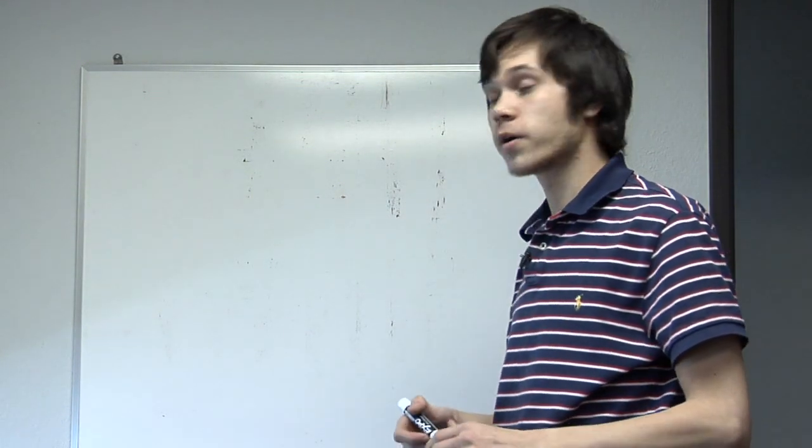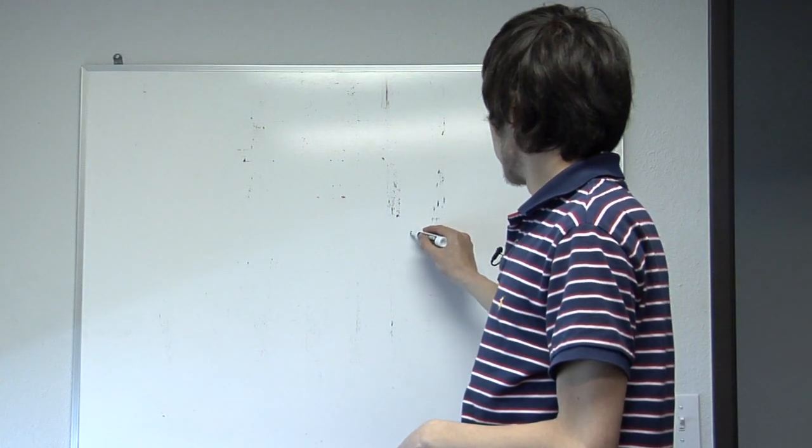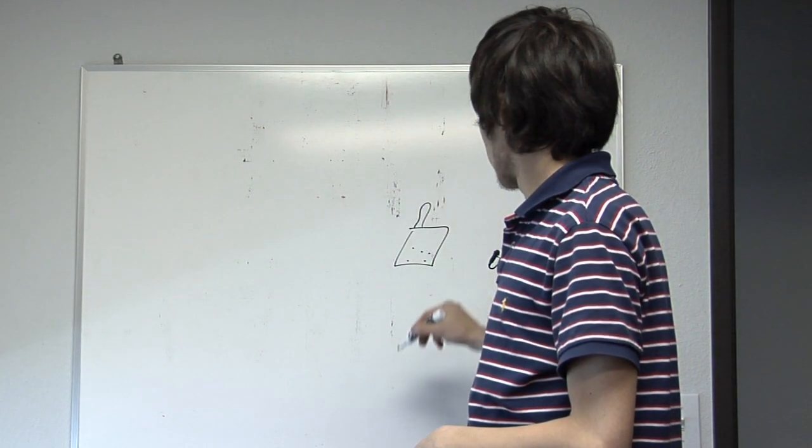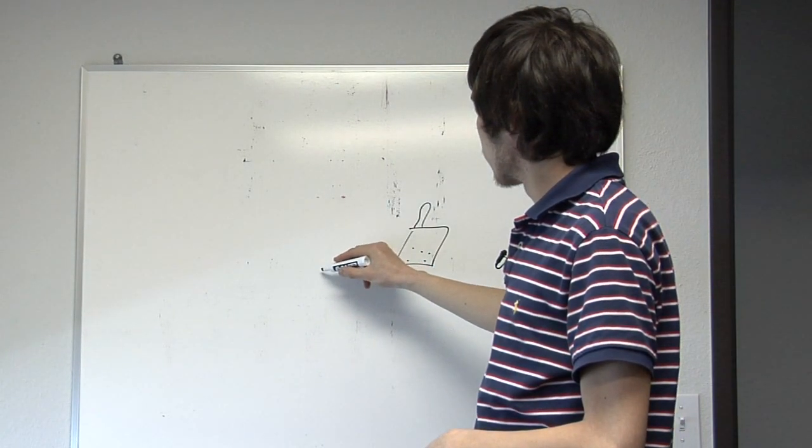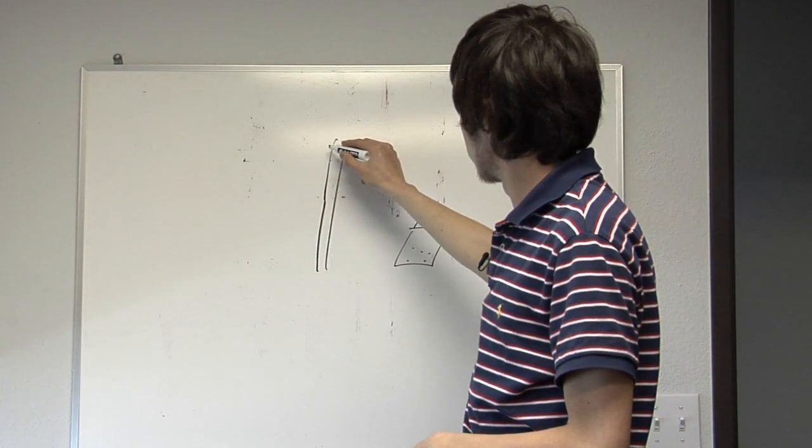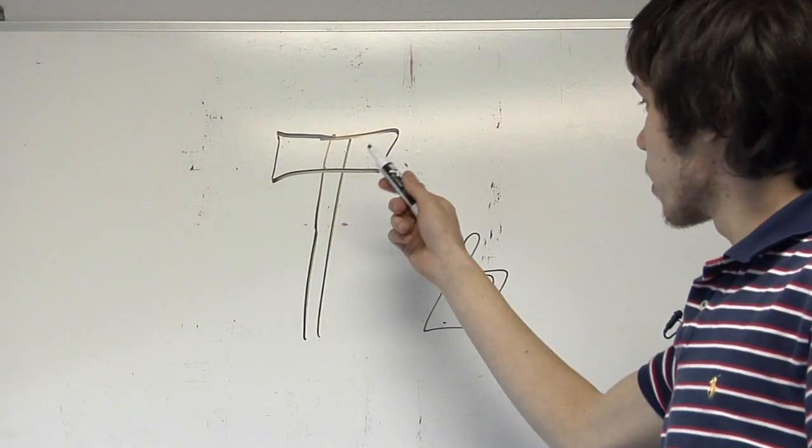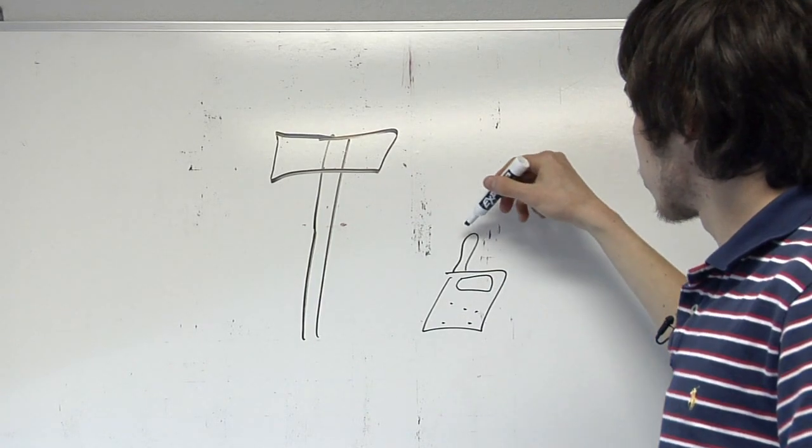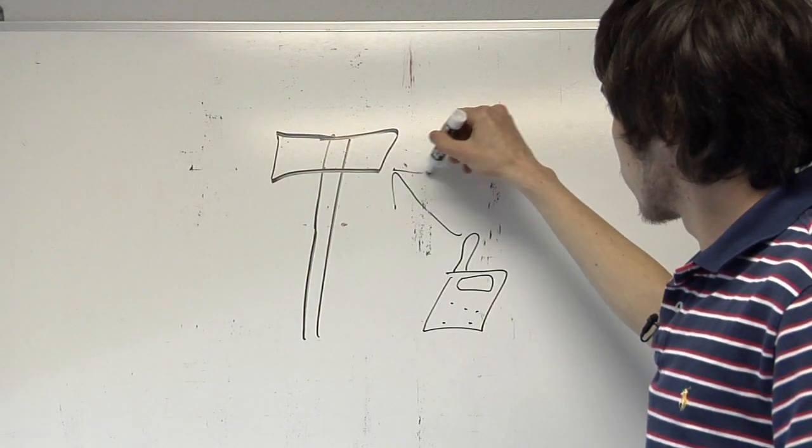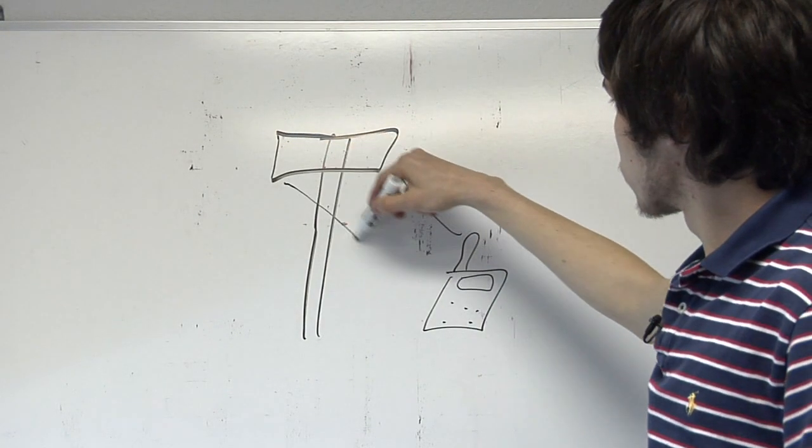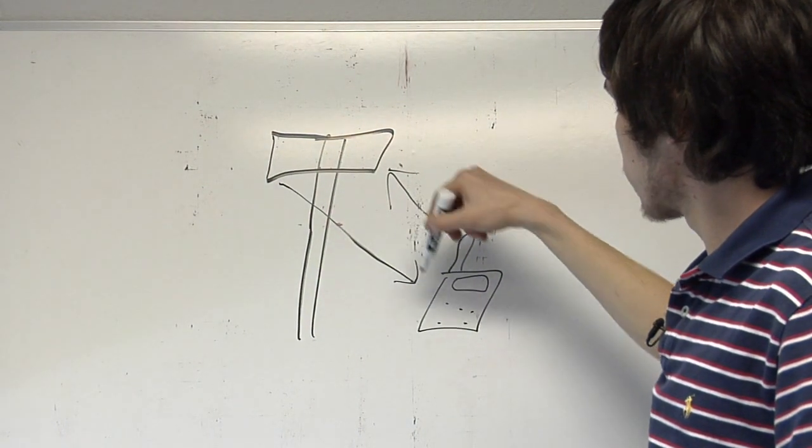So cellular phones work in this way. You have your phone, and then you have a tower that the phone transmits a signal to. The cell phone transmits signals to that tower, and then in return, the tower will transmit signals back to the cell phone.